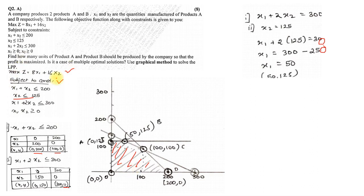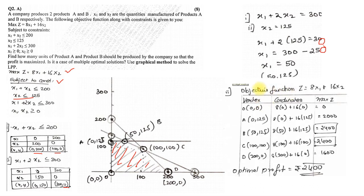Once you get that, the last step is to get the coordinates and substitute the value of their coordinates in our objective function. So our objective function is Z equals 8x1 plus 16x2. We have our vertices as 0, A, B, C, and D. The coordinates are 0,0; 0,125; 50,125; 100,100; and 200,0. We just substituted in the objective function: 8 times 0 plus 16 times 0 is 0. 8 times 0 plus 16 times 125 is 2000. 8 times 50 plus 16 times 125 is 2400. 8 times 100 plus 16 times 100 is 2400. 8 times 200 plus 16 times 0 is 1600.